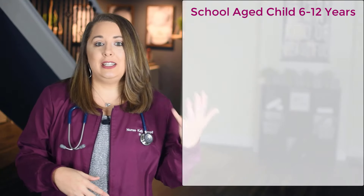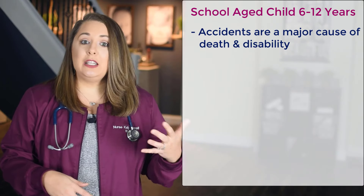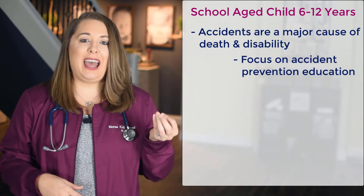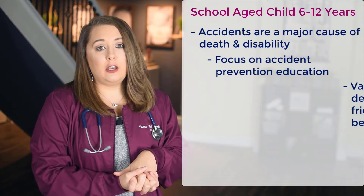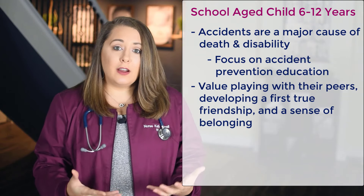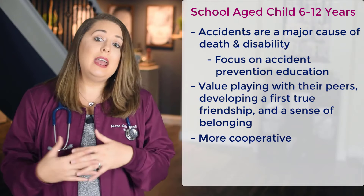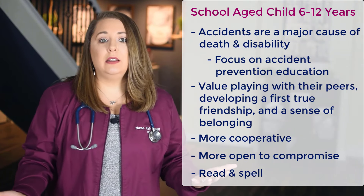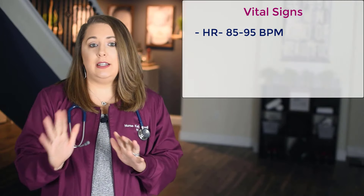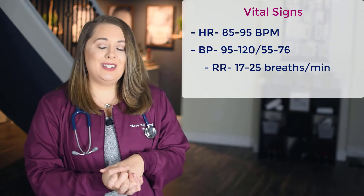School-age children are from age six to twelve years old. At this age, accidents are a major cause of death and disability, so nursing care should focus on accident prevention education with the child and parents. Children at this age value playing with peers, developing first true friendships, and a sense of belonging. Emotionally, they become more cooperative and open to compromise, and start learning how to read and spell. Vital signs: heart rate 85 to 95, blood pressure 95 to 120 over 55 to 76, and respiratory rate 17 to 25.